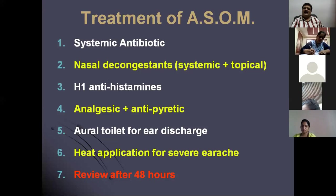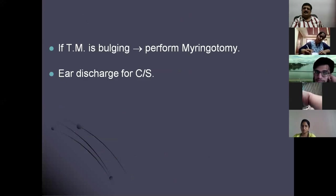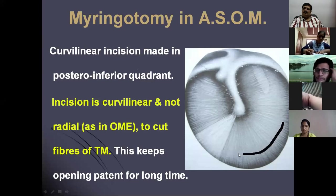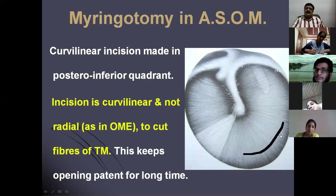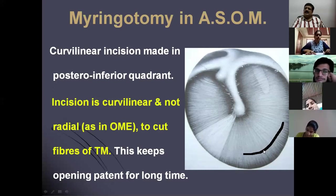These are the symptomatic and infectious management of ASOM. Surgical management will be in the form of myringotomy. You are supposed to take a curvilinear incision in a patient of ASOM, because the fluid comes through your posterior wall and gets collected in the most dependent area. You take the incision a little posterior in a curvilinear fashion so that the pus or mucopus drains out to the maximum.